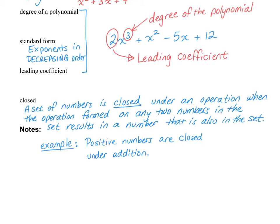If my first example says positive numbers are closed under addition, that means if I take any two positive numbers and add them together, my result will also be a positive number. That's true — any two positive numbers we add together, like two and five: two plus five is still positive. So since the result is also positive, that set is closed under addition. That statement is true.